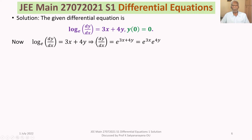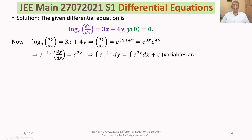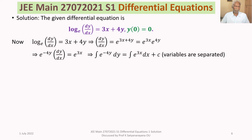Now separating the variables: e^(−4y) dy = e^(3x) dx. Integrating both sides, we get the integral of e^(−4y) dy equals the integral of e^(3x) dx plus c, where c is the constant of integration. This method is called the variables separable method.